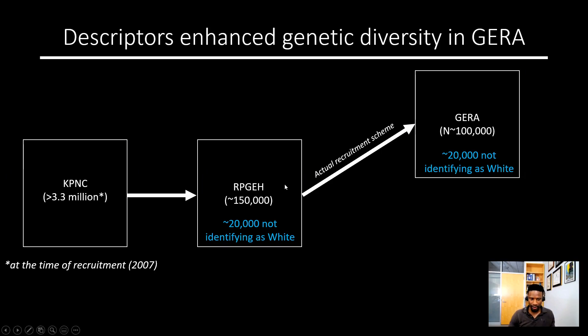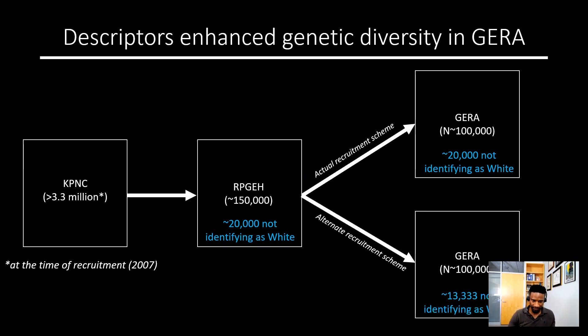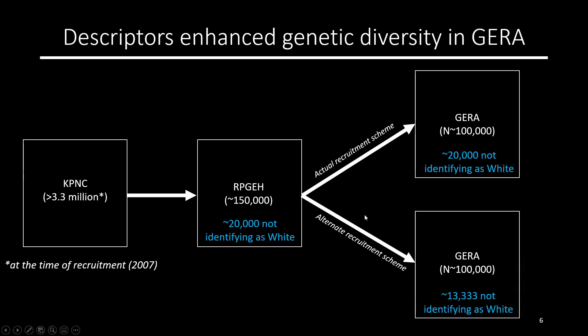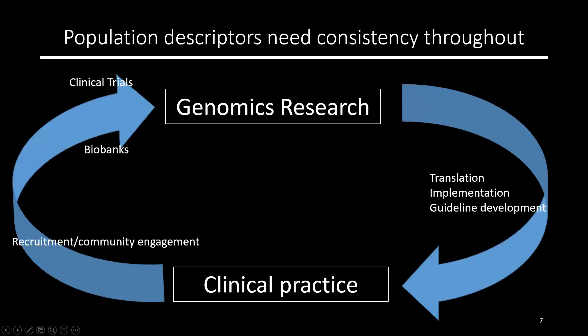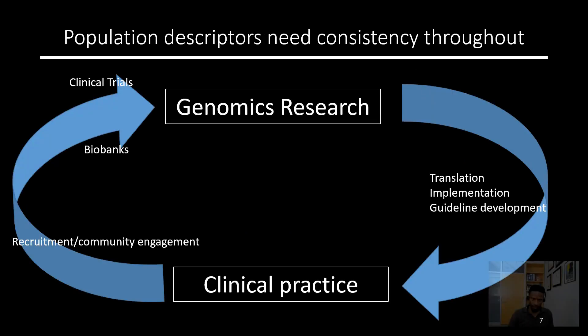For the remaining 80,000 spots, they randomly selected from the approximately 130,000 participants who identified as white in the cohort. If they had just randomly selected from the full cohort, there would have been an even more uneven distribution in the PC plot that I just showed.